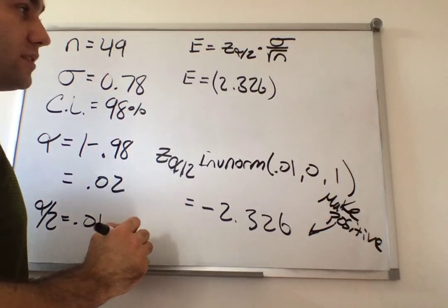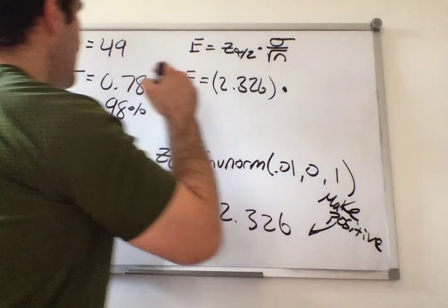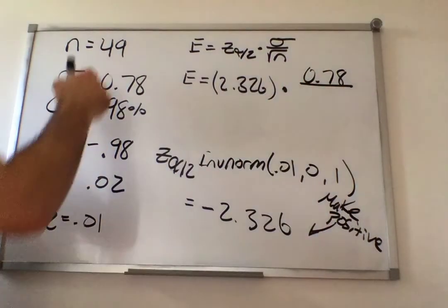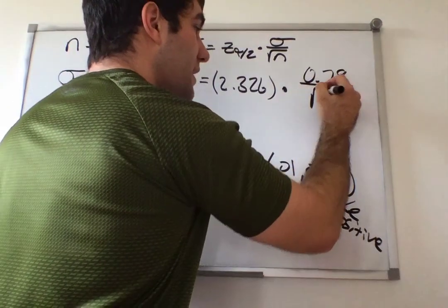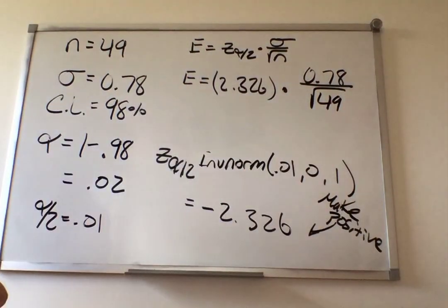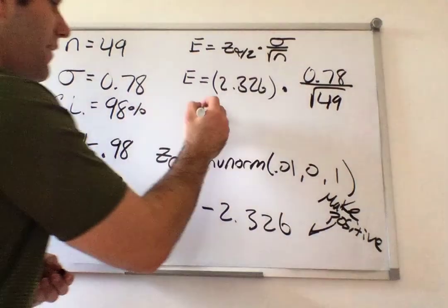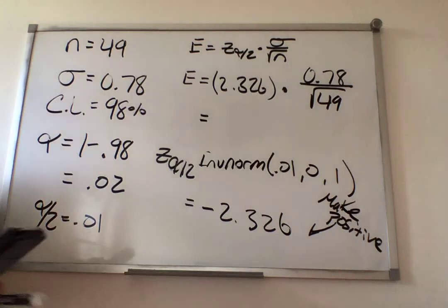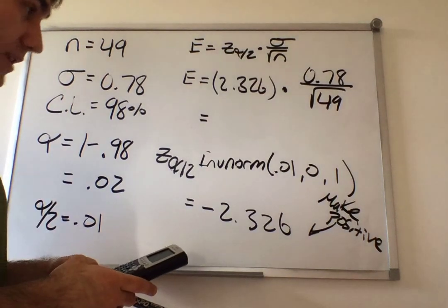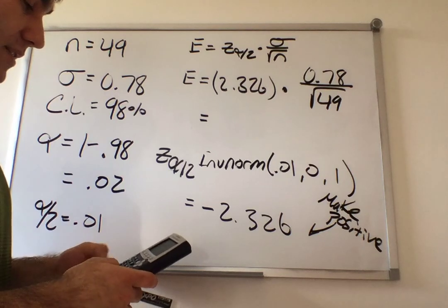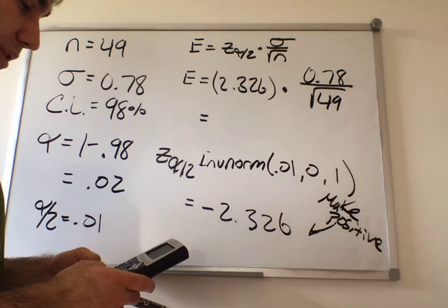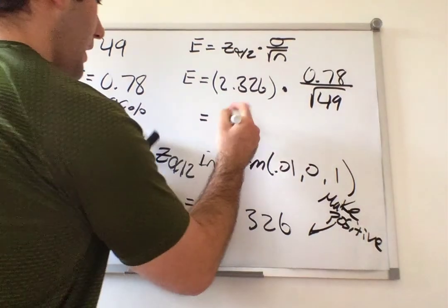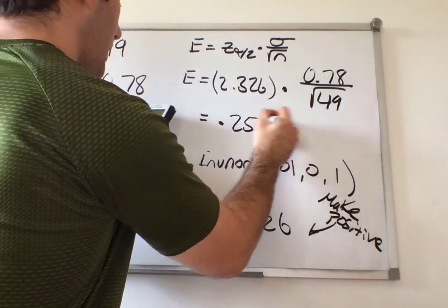Now we have our error. It's 2.326, our z of alpha over 2 — remember, we made it positive — times our sigma, which is 0.78, divided by the square root of our sample size, which is 49. Computing this: 2.326 times 0.78 divided by the square root of 49, and I get 0.2591. That is the margin of error.